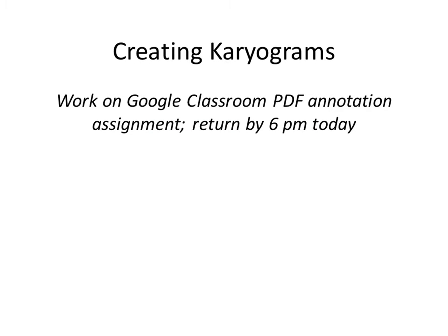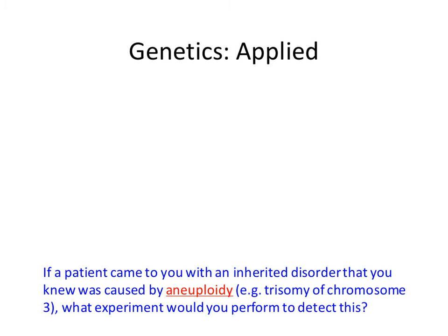I'm sending out a Google Classroom assignment — a PDF with a picture of a metaphase chromosome spread. I'd like you to draw a cartoon by hand of what those chromosomes would look like when rotated into a karyotype. I'm looking for something like this, where you've paired up chromosomes to represent what a karyogram looks like. Send that back by 6pm tonight. It should only take a couple of minutes — just one point, for practice and understanding the process of creating a karyogram.